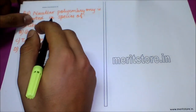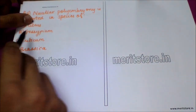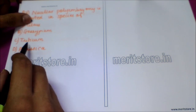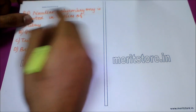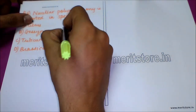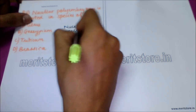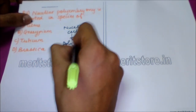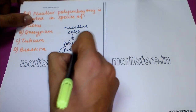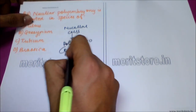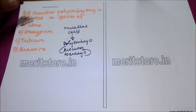The next question is: nucellar polyembryony is reported in species of which plant? Option A: citrus. Option B: gossypium. Option C: triticum. Option D: Brassica. Nucellar polyembryony is a case wherein nucellar cells directly get converted into a poly embryo, which is a precursor to the embryo, and this condition is observed in species of citrus. So the answer is option A.